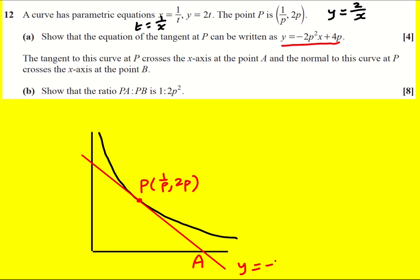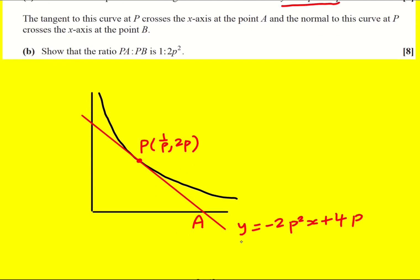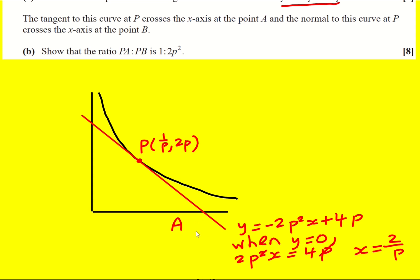The tangent crosses the x-axis at point A. We've already worked out that equation: y equals minus 2p squared x plus 4p. When y equals 0, we get 2p squared x equals 4p. Dividing through by p, x equals 4 over 2p, or simply 2/p. So coordinate A is (2/p, 0).